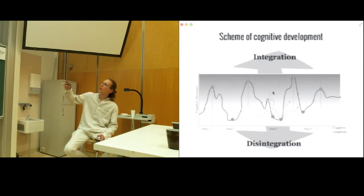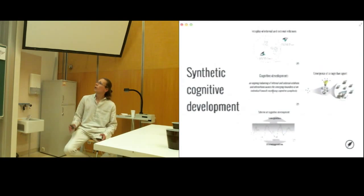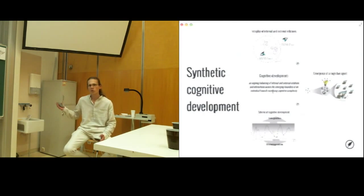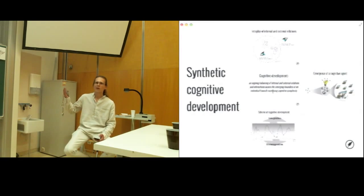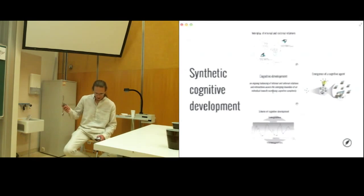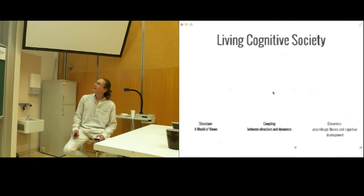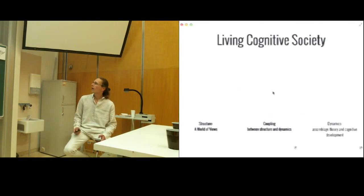We call the whole process synthetic cognitive development, and we argue that this is a generic process of ever-expanding density. It applies not only to humans but also to any cognitive agents, including the global society as a living cognitive system and cognitive agent. So we have two aspects — structure and dynamics — and now we want to see how structure relates to dynamics.